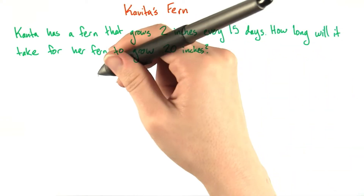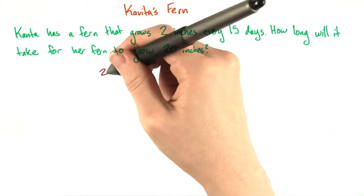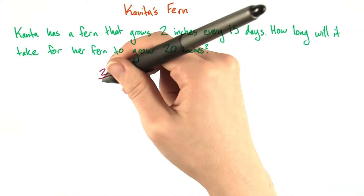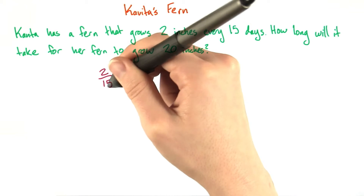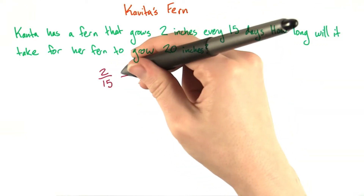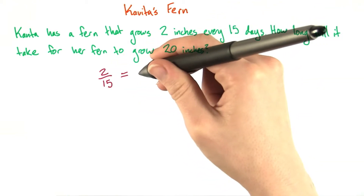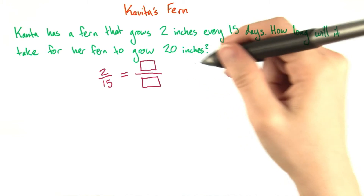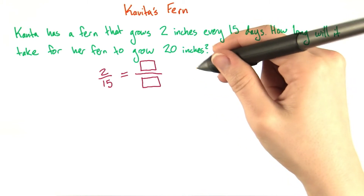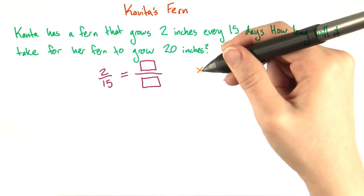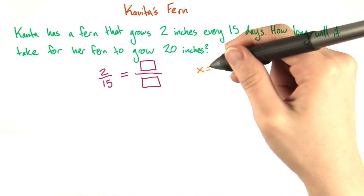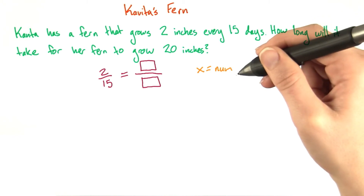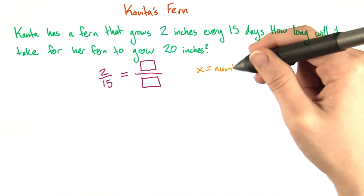We know that her fern grows 2 inches every 15 days. We have to set that equal to another proportion. Set up the proportion and use x to represent the number of days that it will take for Kavita's fern to grow 20 inches.